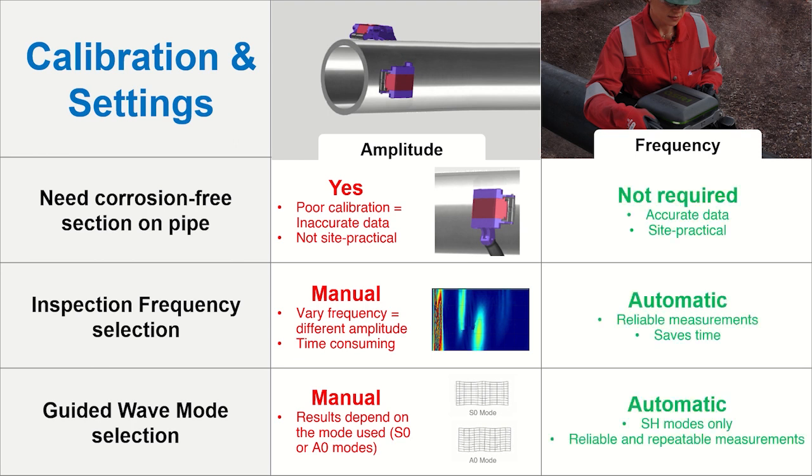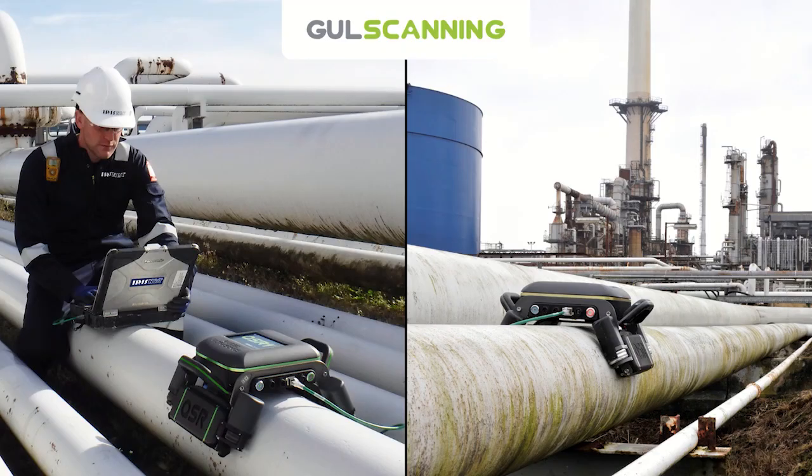GUL scanning helps operators keep things simple and practical by removing the need to calibrate from a corrosion-free pipe and by automatically selecting the inspection frequency and guided wave mode. GUL scanning has developed a practical and easy-to-use guided wave scanner that helps inspectors obtain reliable data in the field.